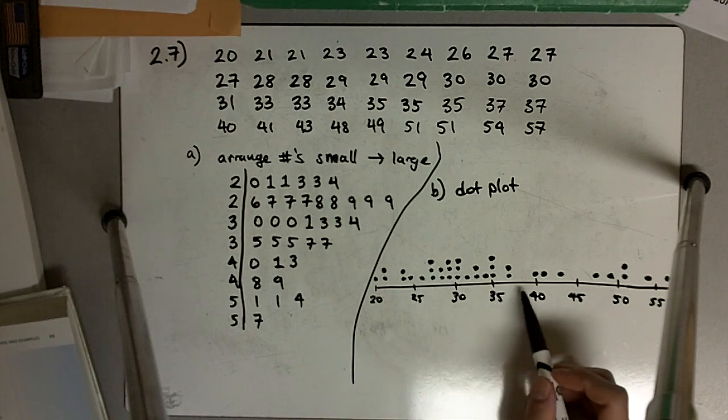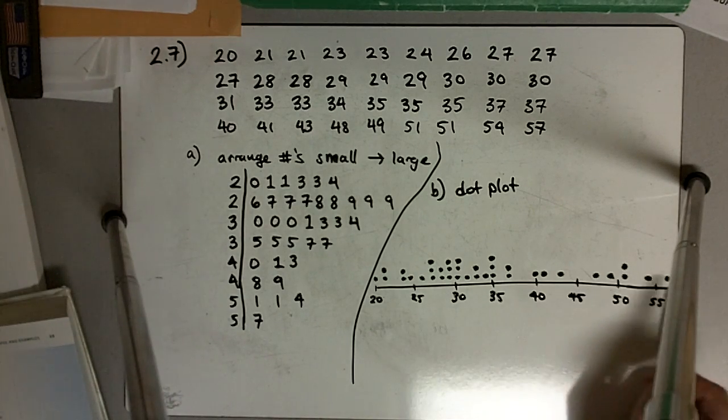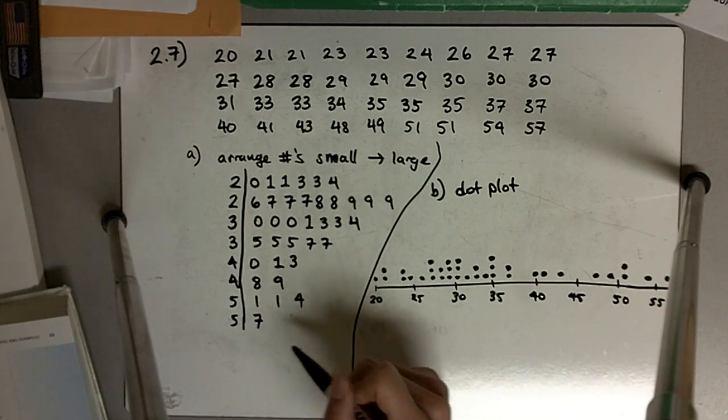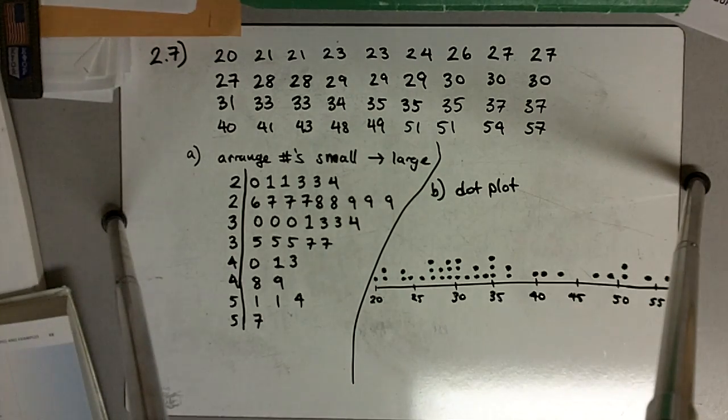And there is our dot plot, and we can see we have a lot more numbers down in this lower range and a few numbers in the upper range. So, stem and leaf plot and dot plot. Hope that helps.